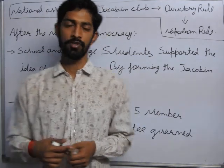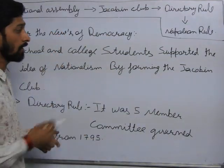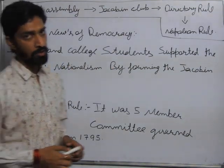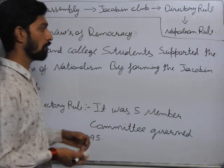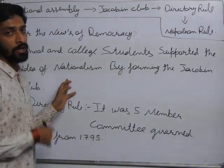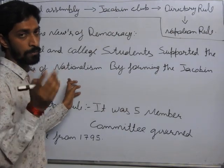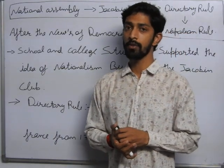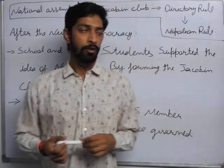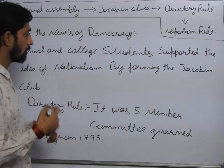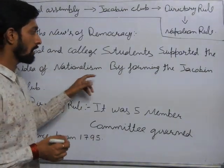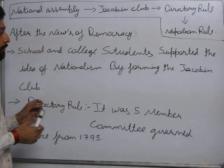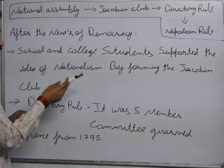What was the news about democracy in France? School and college students supported the idea of nationalism. What was the idea of nationalism in France? This idea was spread out in France through nationalism. They spread the idea of nationalism by forming the Jacobin Club. Schools and college students supported the idea of nationalism by forming the Jacobin Club.